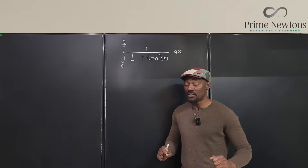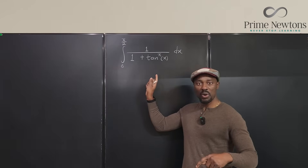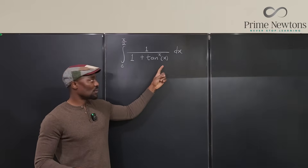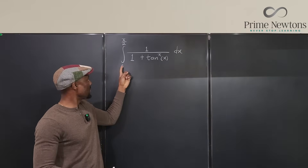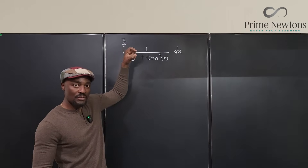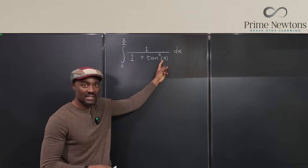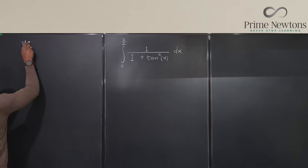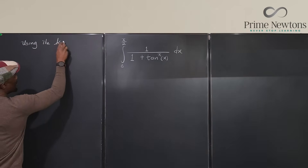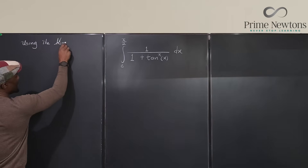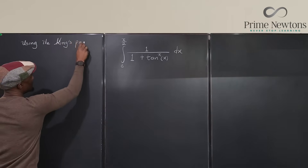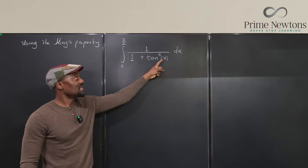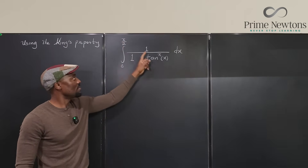What I'm going to do is use the King's property, but I want to show you why it's going to work here. Remember that every time we do a problem like this, you want to replace x with the sum of the two bounds — the upper and lower bounds added together — minus x. So using the King's property, this integral is going to be the same thing if we replace x with zero plus pi over two minus x.